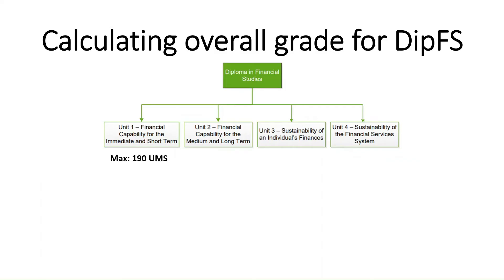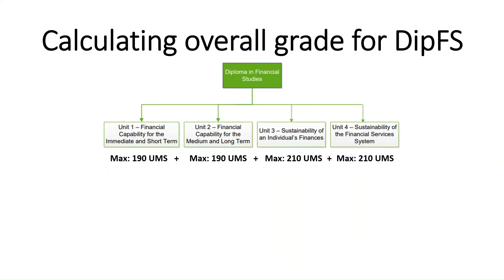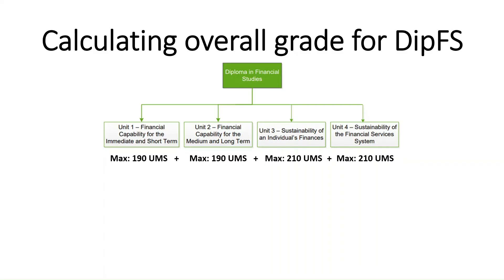The UMS mark — for each of the four units you will have studied as part of the Diploma in Financial Studies — carries a certain number of UMS, or Uniform Marking Scheme, points. Each of the units in the Certificate of Financial Studies carries a maximum of 190 UMS, whereas Units 3 and 4 in the second year of the qualification — which gets you your diploma — carry a maximum of 210 UMS. So the maximum mark you can get if you scored 100% in all four units would be 800 UMS in total.